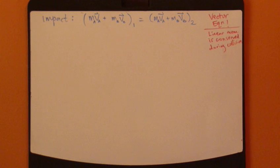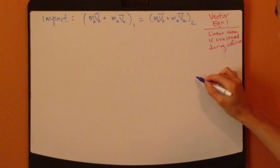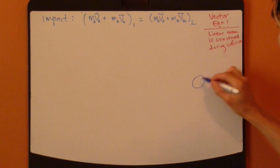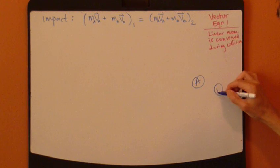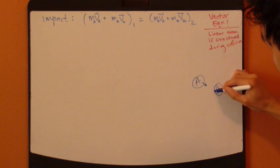Now, usually, for a collision type problem, you have two objects, A and B. Each can be coming in a different direction.